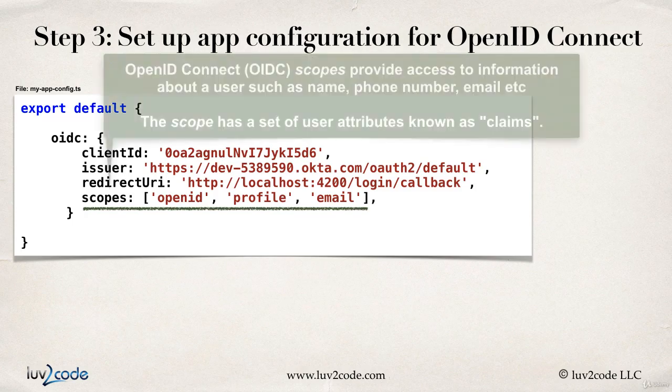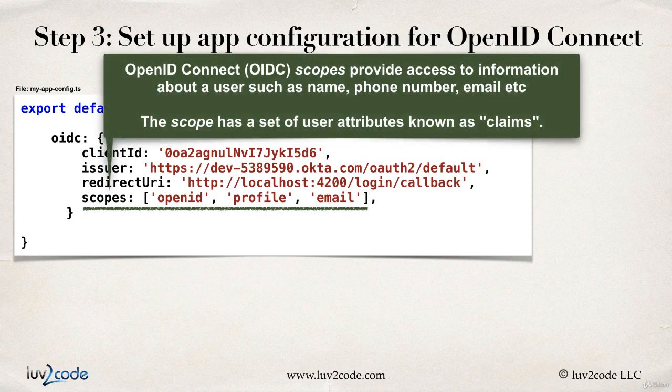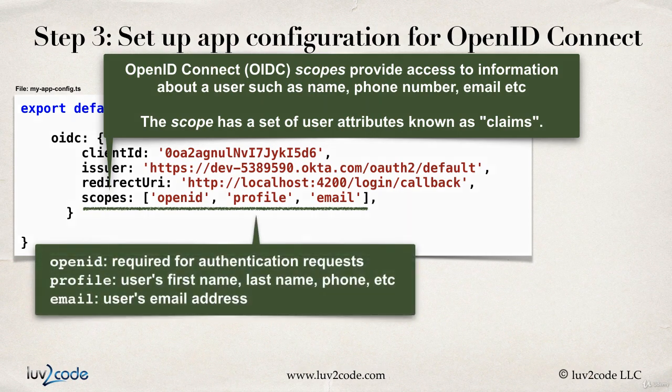Here we have scopes. In OpenID Connect, scopes provide access to information about a user, such as their name, phone number, email, department, and so on. A scope has a set of user attributes known as claims. OpenID is required for authentication requests. Profile contains a user's first name, last name, phone number, etc. And email contains the user's email address.